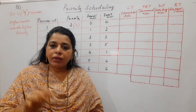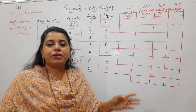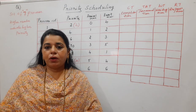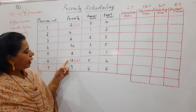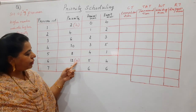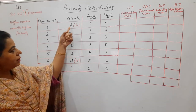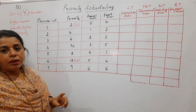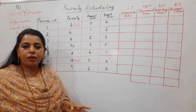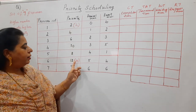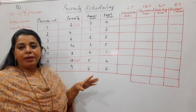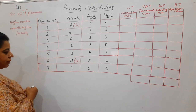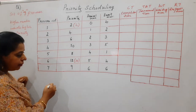Whatever convention is given in the question, you must follow it. If the question states lower number indicates higher priority, then you mark accordingly and proceed with scheduling all the processes using the Gantt chart. So let us start. The Gantt chart always starts from zero.